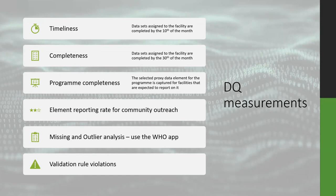The ideal is to have an element reporting rate with customised data sets. At this stage we only do that for the community outreach services, because it is a defined data set which every single outreach service is expected to report on for every single data element — as opposed to program reporting rate where you don't have customised data sets and a facility may not need to report on all data elements assigned to them. We do missing and outlier analysis using the WHO app and we run validation rule reports to pick up violations as well.